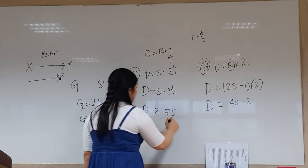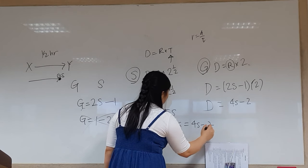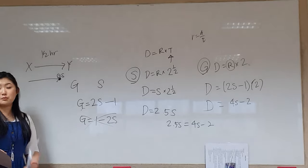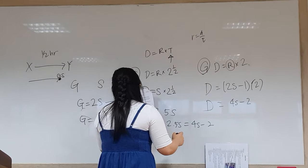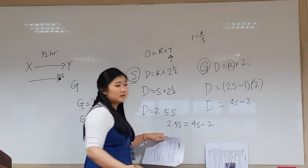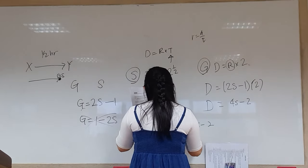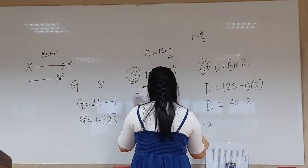So you can set these two equal to each other: 2.5S equals 4S minus 2, and use that to solve it with basic algebra at this point. You guys all know how to solve for S. If we were to do the math, and I'm just going to write it here because the answer is already here, you would find that the S or the rate is 4 over 3.